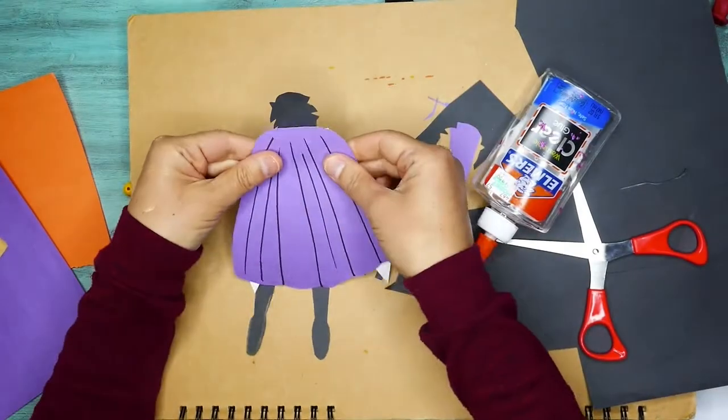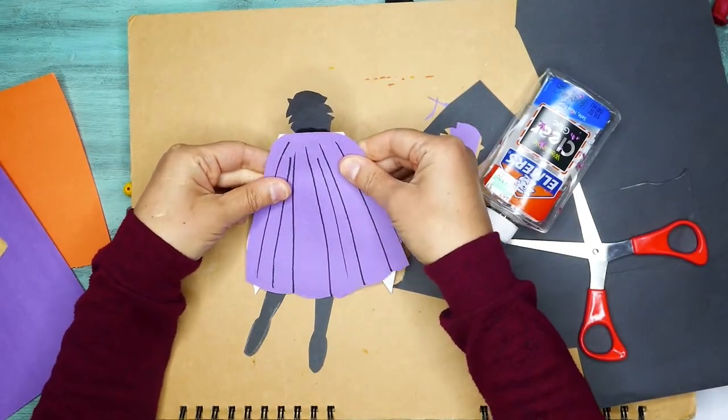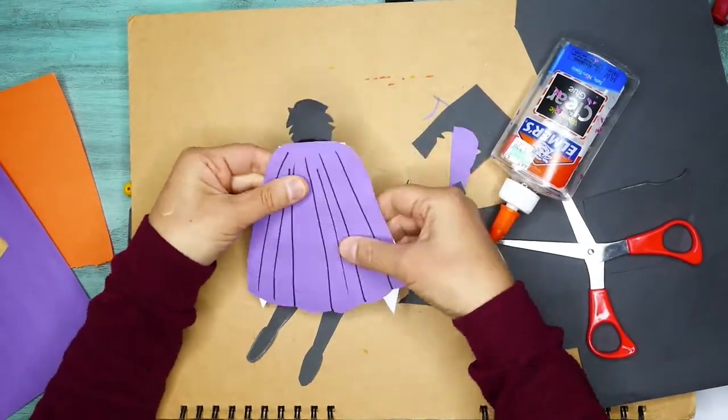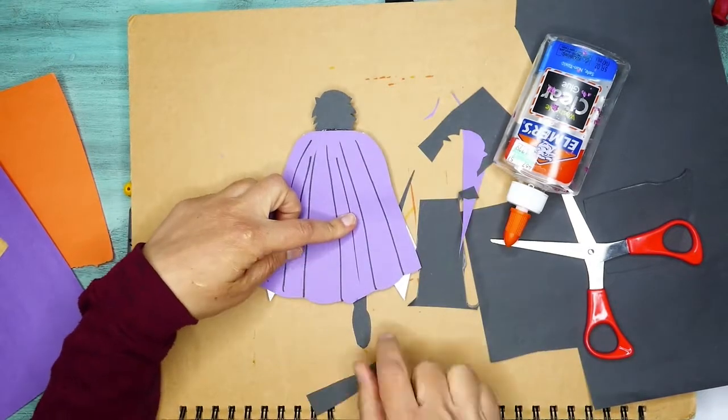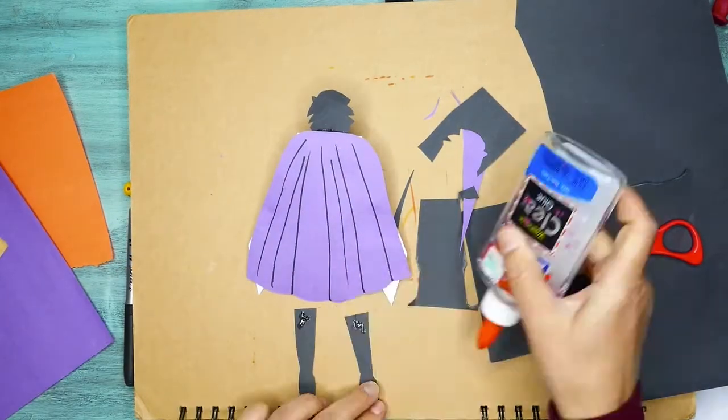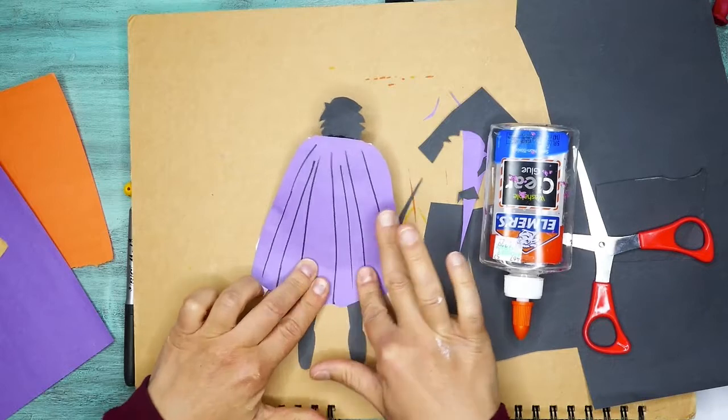So you can see I just put a little glue there. I glued the head on and I'm just going to glue the cape onto the back there. And then I'm going to glue some legs on the very bottom there. So just a little glue is fine.